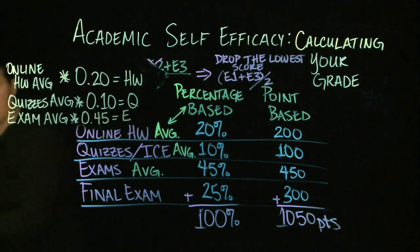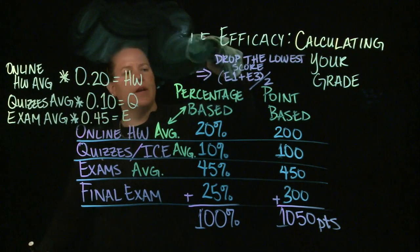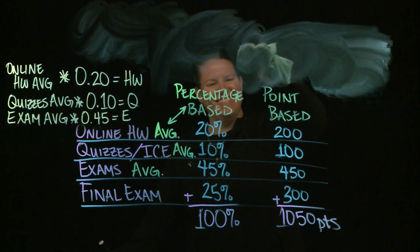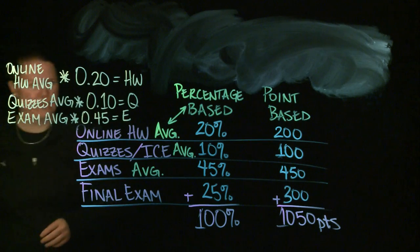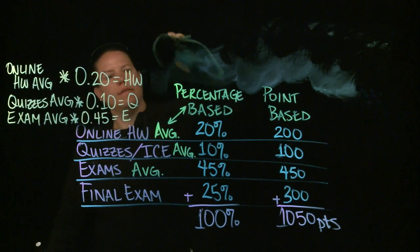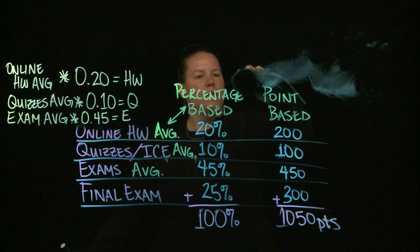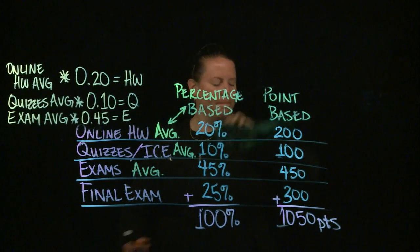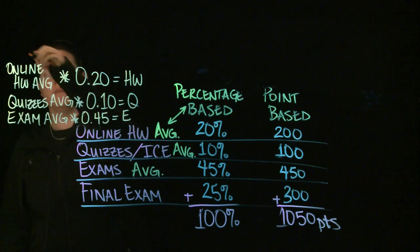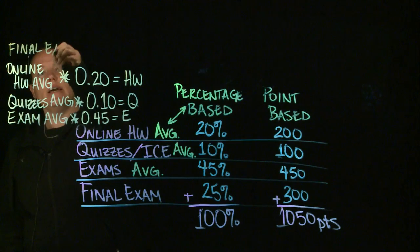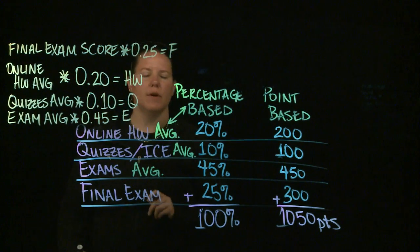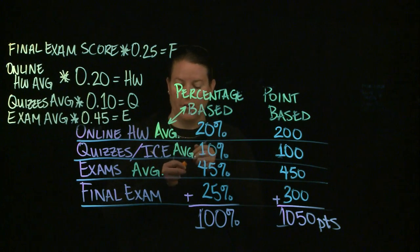The idea here is that you are going to do your final exam as well, and that's usually just a final exam score. Whatever you got on the final exam, you're going to multiply that by .25.